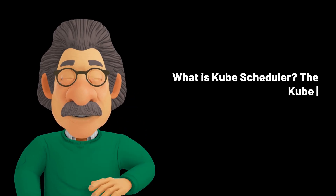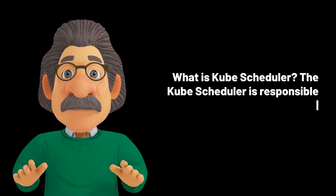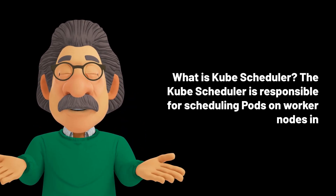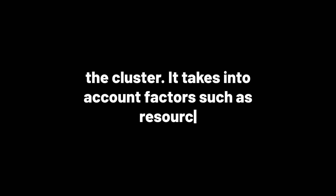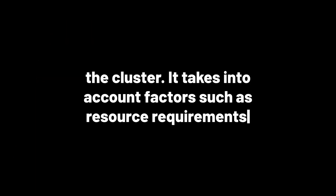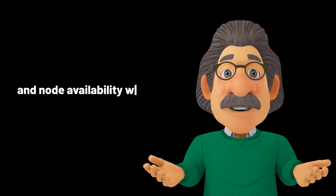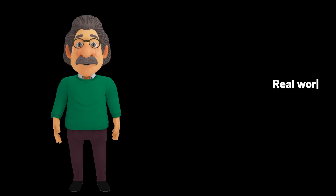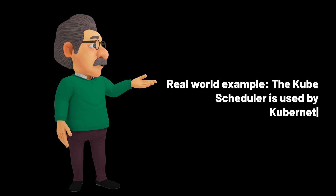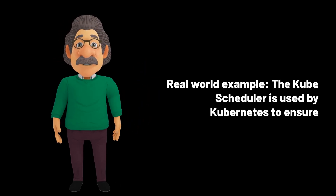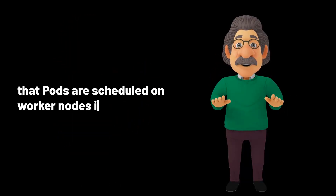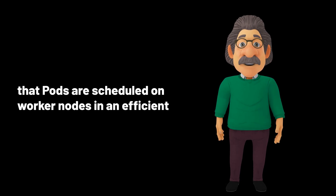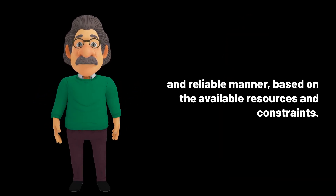What is the kube scheduler? The kube scheduler is responsible for scheduling pods on worker nodes in the cluster. It takes into account factors such as resource requirements and node availability when making scheduling decisions. Real-world example: the kube scheduler is used by Kubernetes to ensure that pods are scheduled on worker nodes in an efficient and reliable manner, based on the available resources and constraints.